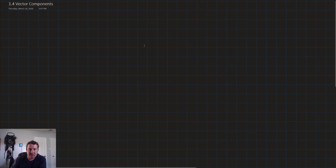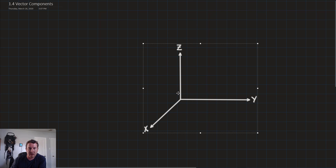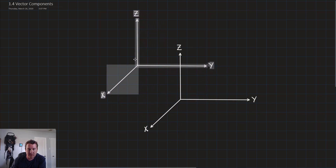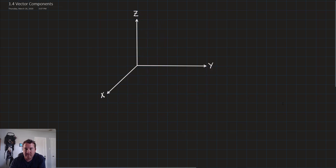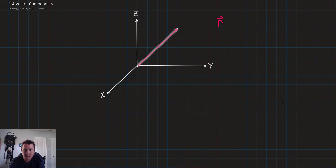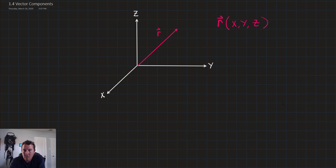Let's start by setting up an axis. Suppose that we have a vector r that comes from the origin out to some point in space. That point has some x component, some y component, and some z component. We can say that r is composed of this x bit, this y bit, and this z bit.